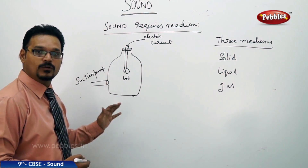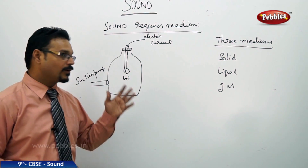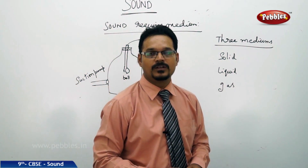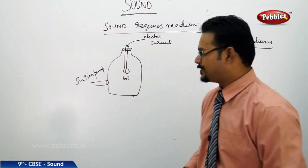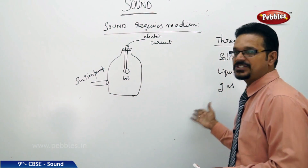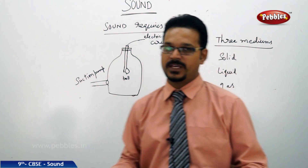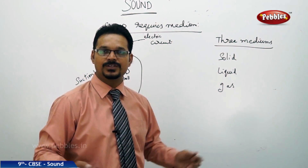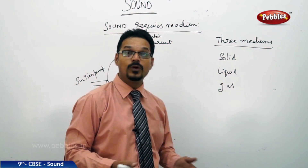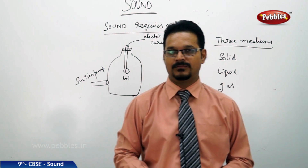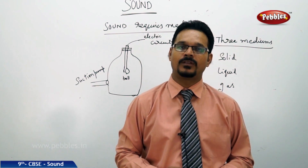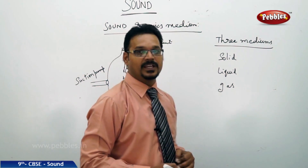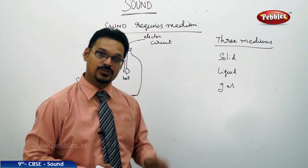This simple experiment tells us that sound requires a medium. Now, there are generally three types of mediums: solid medium, liquid medium, and gaseous medium. Gas means air or any other gas; liquid means water, milk, or any solution; and solid includes wood, plastic, etc. The question is: in which medium does sound travel fastest?